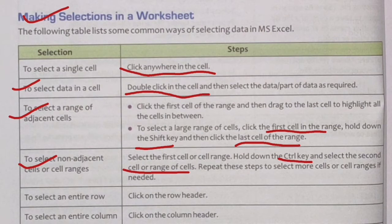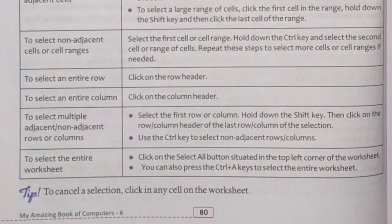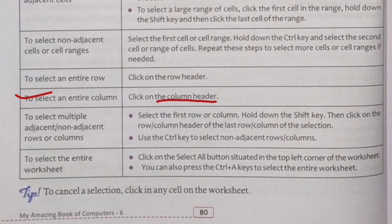To select an entire row, click on the row header. To select an entire column, click on the column header. To select multiple adjacent rows or columns, select the first row or column header, hold down the Shift key, then click on the header of the last row or column in the selection.